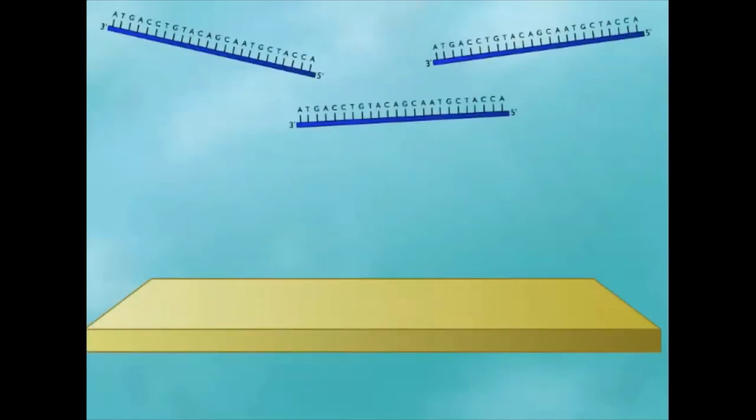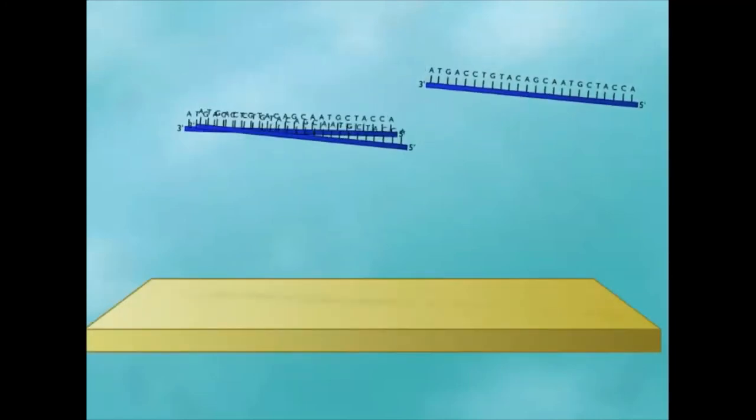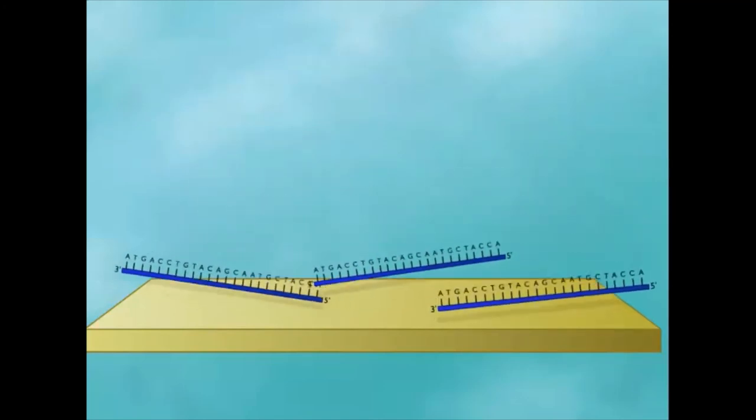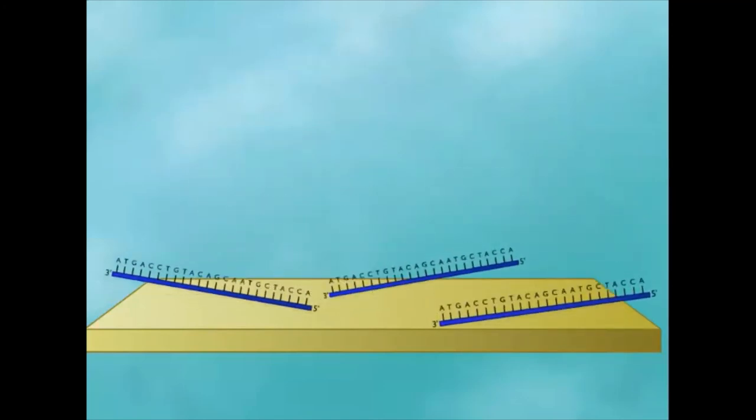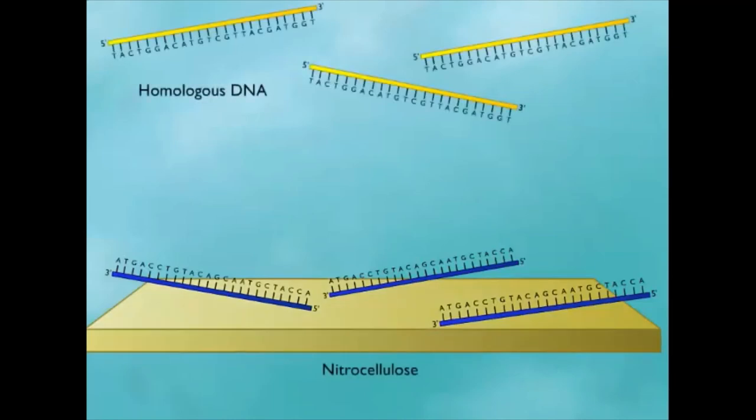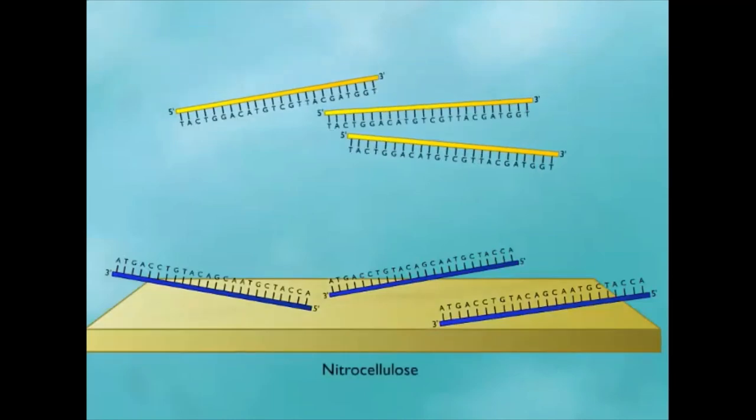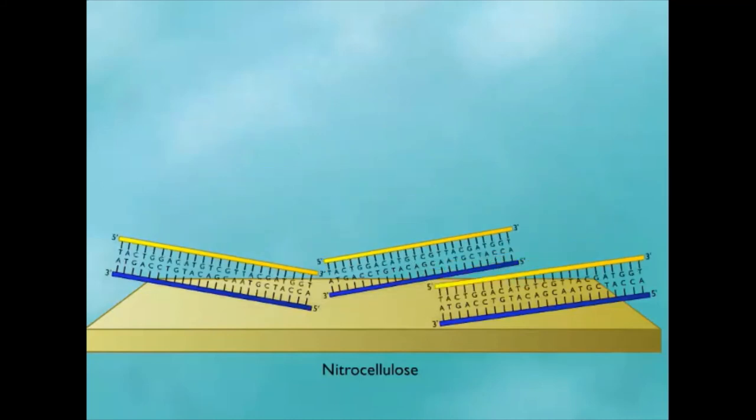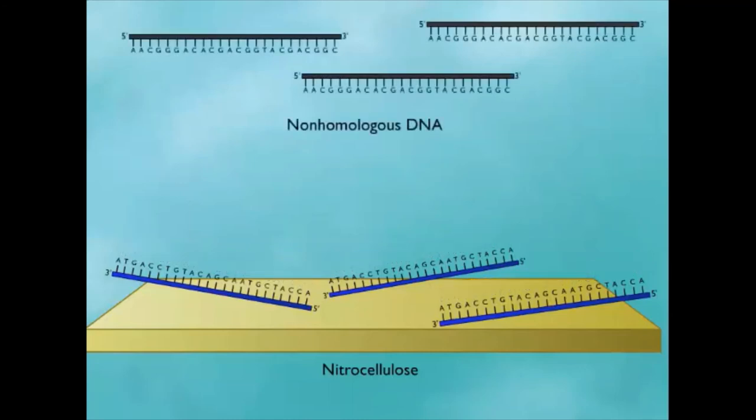The high specificity of base pairing interactions between complementary strands of DNA can be used to locate a specific nucleotide sequence in a sample. If the DNA from one source is immobilized by attachment to a solid surface such as nitrocellulose, homologous DNA from another source will hybridize and be retained by the immobilized DNA. This is the basis for various DNA probe techniques. Non-homologous DNA will not attach.